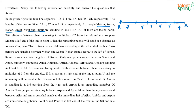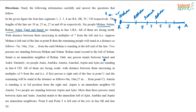Mohan is standing at the left end of the line at point R. All of them are facing north. Two persons are standing between Mohan and Sohan — so this is Sohan. Rohan stands second to the left of Sohan — so this is Rohan. Sumit is an immediate neighbor of Rohan. Only one person stands between Sumit and Ankit — so this has to be Ankit. And in that case, this has to be Vineet. This is the arrangement for line 1.